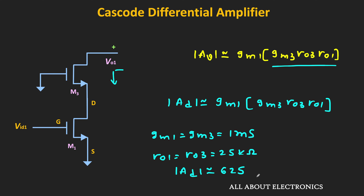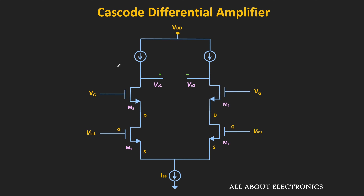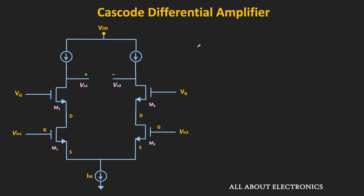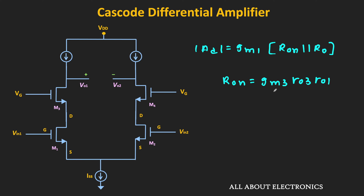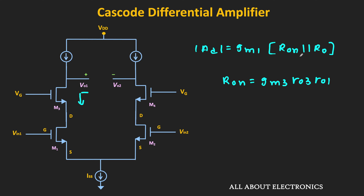In that case, the differential gain will come around as 625. There is a significant improvement in this differential gain. Now so far we have assumed that this current source is ideal and its output impedance is equal to infinite. But the actual current source has a finite output impedance, and due to that, the gain of this differential amplifier will reduce. Considering the finite output impedance of this current source, the differential gain of this cascode differential amplifier is equal to GM1 times R01 in parallel with R0, where RON equals GM3 times R03 times R01, which is the output impedance of the cascode configuration. So if we want higher gain, then R0 should be much higher than RON.